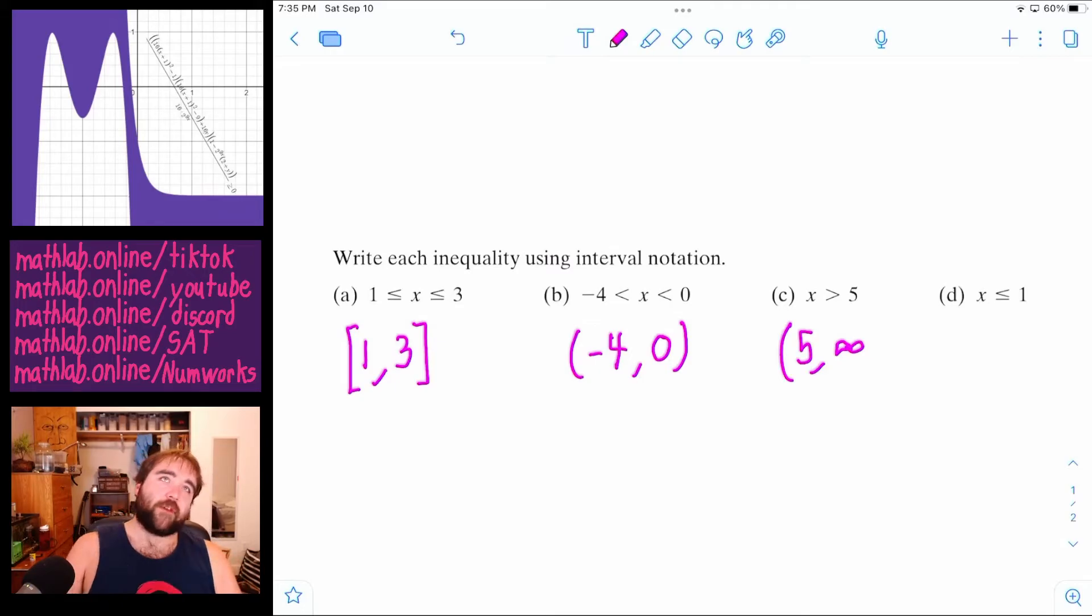And then with infinity, the idea is, you can't ever get to infinity, right? It just keeps getting closer and closer and closer to infinity. So really, it can't be infinity either. So whenever we have an infinity, we always put a parenthesis on it.